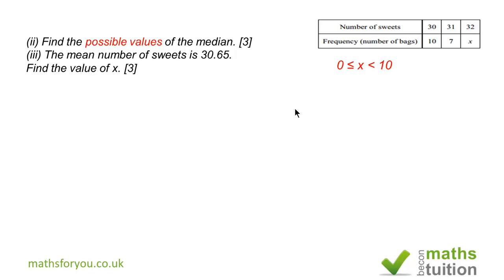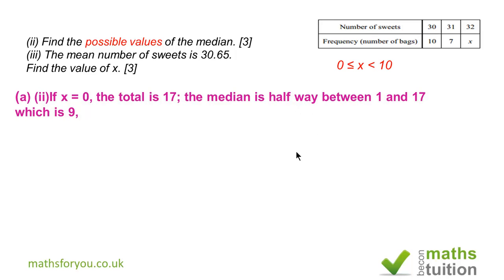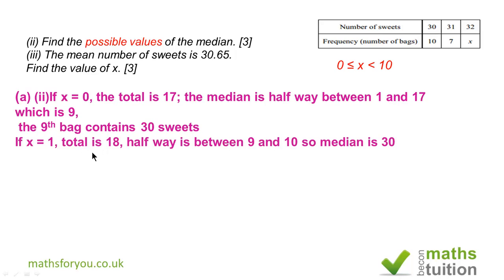If x is 0, the total number is 17, so the median will be the 9th package, so the 9th bag or package has got 30 sweets. If x is 1, the total is 18, and half way is between the 9th and the 10th package, and that's again 30.